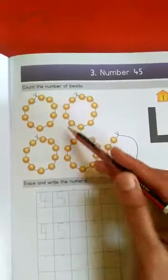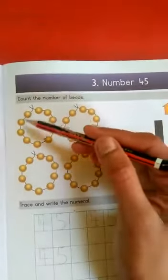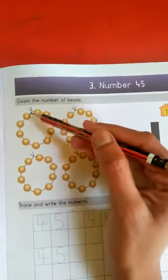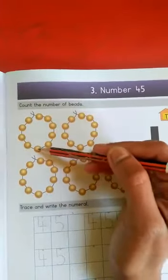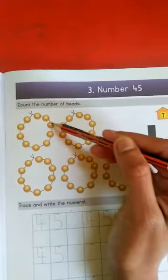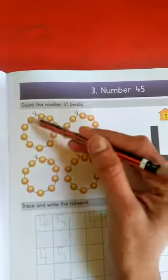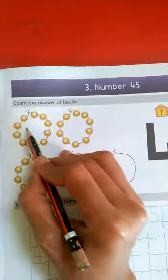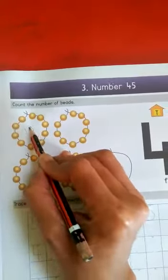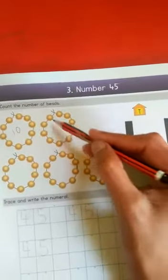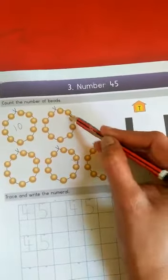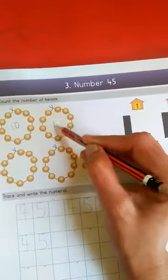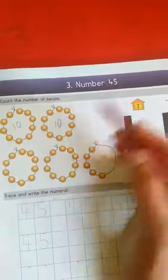Now let's count these beads. We are going to start from this set. Count it. 1, 2, 3, 4, 5, 6, 7, 8, 9, 10. So in this set, there are 10 beads. Count here. 1, 2, 3, 4, 5, 6, 7, 8, 9, 10. In this set, there are 10 beads.